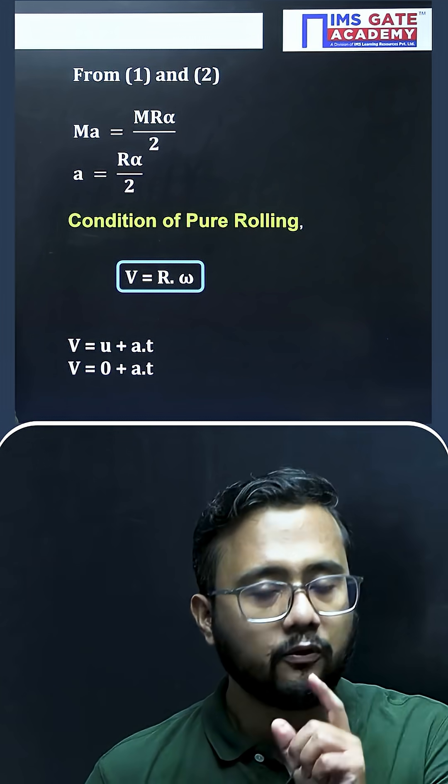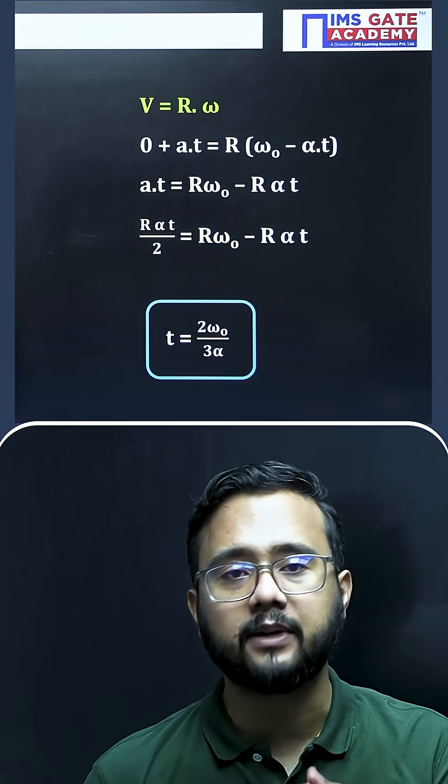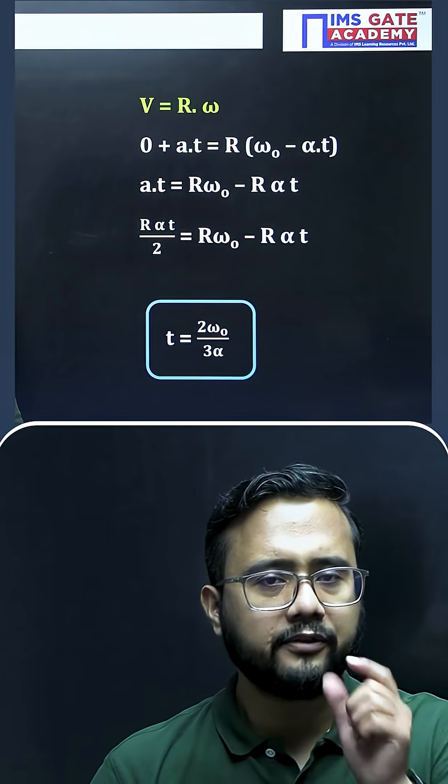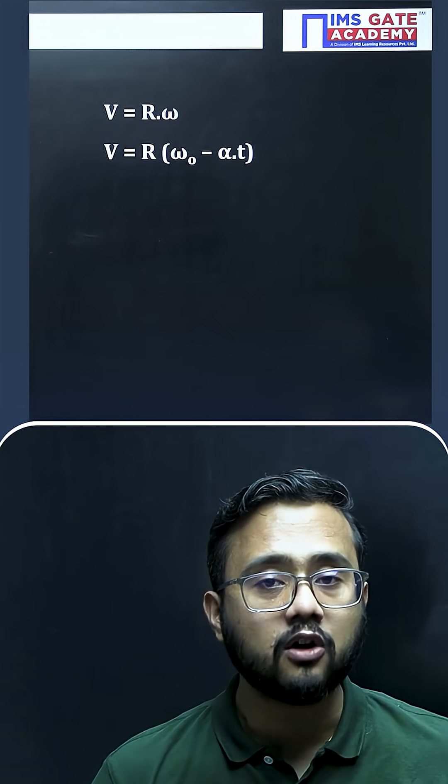Now we will use these values in the v equals to R omega formula to get the value of the time here. Now as we got the time t, we'll be using again v equals to R omega to get the velocity answer here. So when we will be using v equals to R omega, omega we know already it is omega naught plus alpha t, but minus sign will be there.